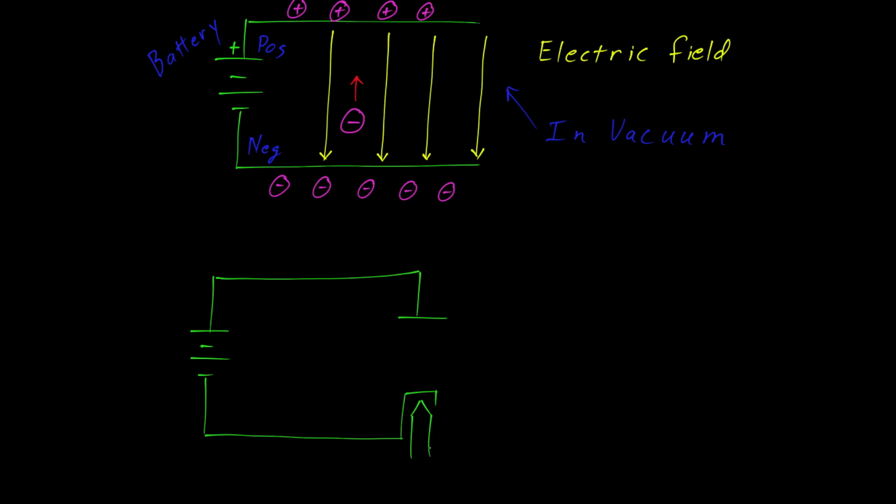Now a vacuum tube will have a few parts. It will have an anode and a cathode. The anode is sometimes called the plate, and the cathode could be thought of as the electron emitter. The final part is located inside the cathode, and that's called the heater.